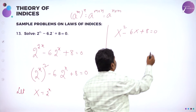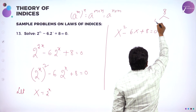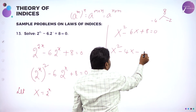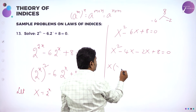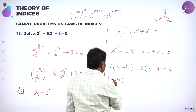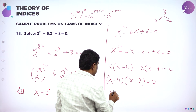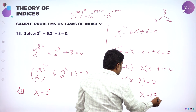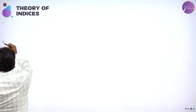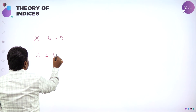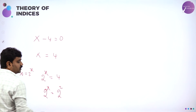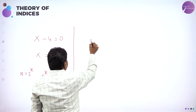If you substitute it will become X² minus 6X plus 8 equals 0. Factorize this. Factors of 8 that give 6: minus 4 and minus 2 — multiply gives plus 8, add gives minus 6. So write X² minus 4X minus 2X plus 8. Take X common: X(X minus 4). Take minus 2 common: minus 2(X minus 4). So (X minus 4)(X minus 2) equals 0. First root: X minus 4 equals 0, so X equals 4. We assumed X = 2^x, so 2^x = 4 = 2². Bases are same, so x equals 2.